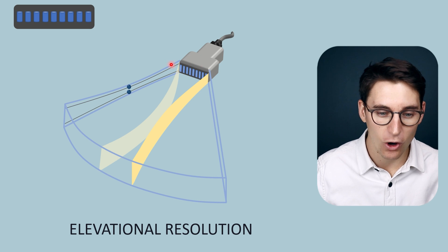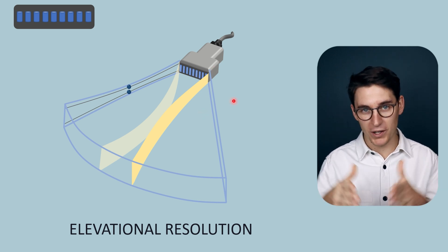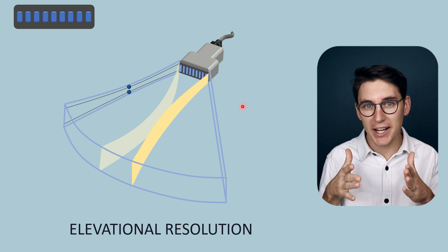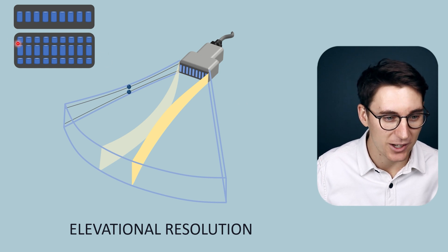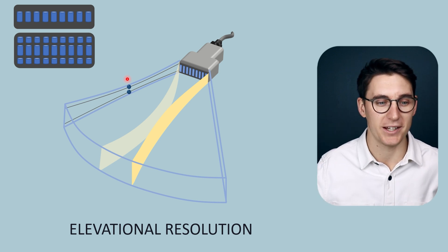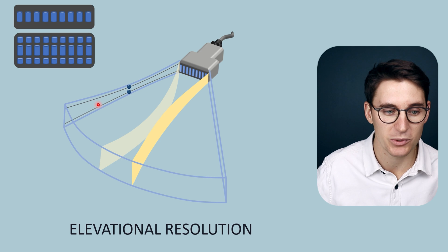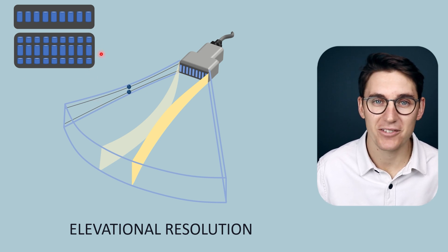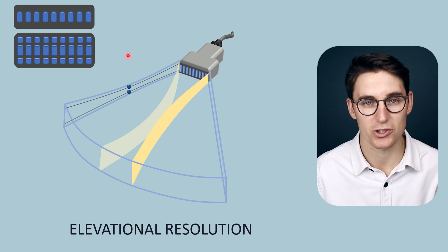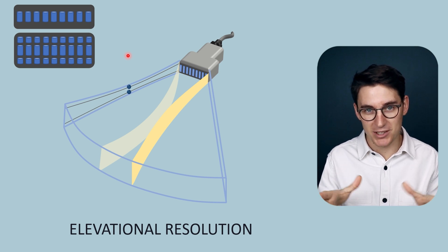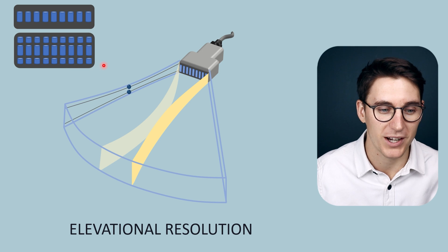We can place an acoustic lens over the front of the transducer to focus the beam height down to a set focal depth, much like an acoustic lens focuses beam width. We've seen that phased arrays can change focal depth in the lateral plane; the same applies to elevational resolution. Adding more transducer elements in the elevational plane creates a 1.5D transducer array. A 2D array has equal rows and columns; a 1.5D array has fewer rows than columns, typically 5 to 7 rows. These elements can be phased in the elevational plane to achieve the required elevational focal depth.